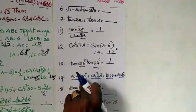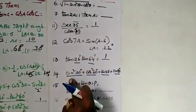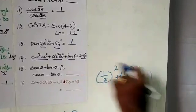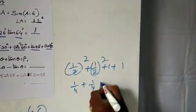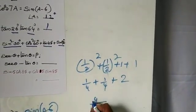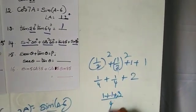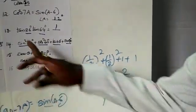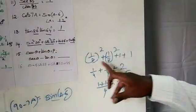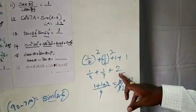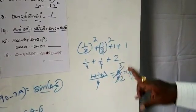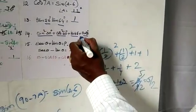Now sin squared 30 is 1/2 whole squared, which is 1/4. Cos squared 30 is also 1/2 whole squared, which is 1/4. Tan 45 is 1. Plus 1 plus 1. Taking LCM as 4: 1 plus 1 plus 8 by 4, that is equal to 10 by 4, which simplifies to 5 by 2. So the answer is 5 by 2.